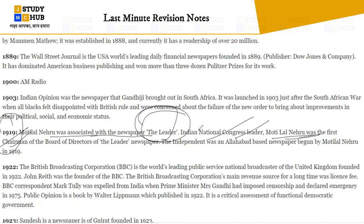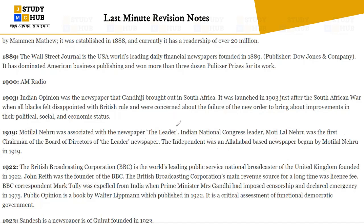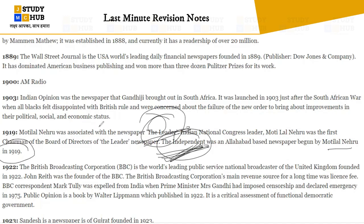In 1919, Motilal Nehru was associated with the newspaper The Leader. Motilal Nehru was the first chairman of its board of directors. The Independent was an Allahabad-based newspaper also started by Motilal Nehru. Two newspapers to note: The Leader and The Independent — the Independent in 1919.